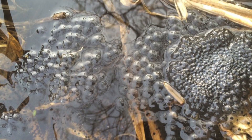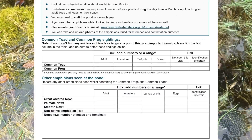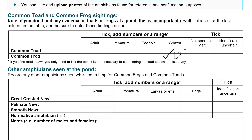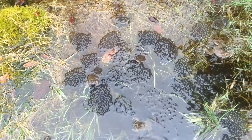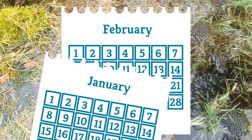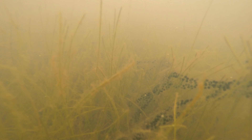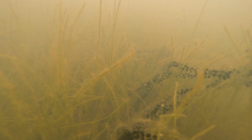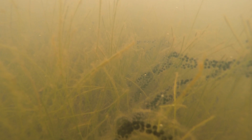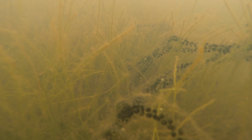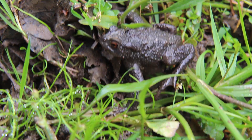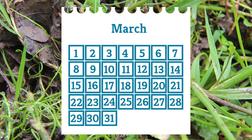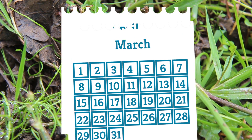Clumps of frog spawn are usually easy to see. We're interested in recording presence, but you can also count the number of clumps — one clump equals one female, so it's a good indication of population size. The best time to look for spawn is in February, but frogs can start breeding in early January through to March. Toad spawn is deposited in long strings. It's often harder to spot because toads like to wind their spawn around underwater plants. This also makes it difficult to count the number of strings, so we only record presence or absence for toad spawn. Common toads breed slightly later than common frog, so March is a good time to look for spawn, though you may find it in April in some years.